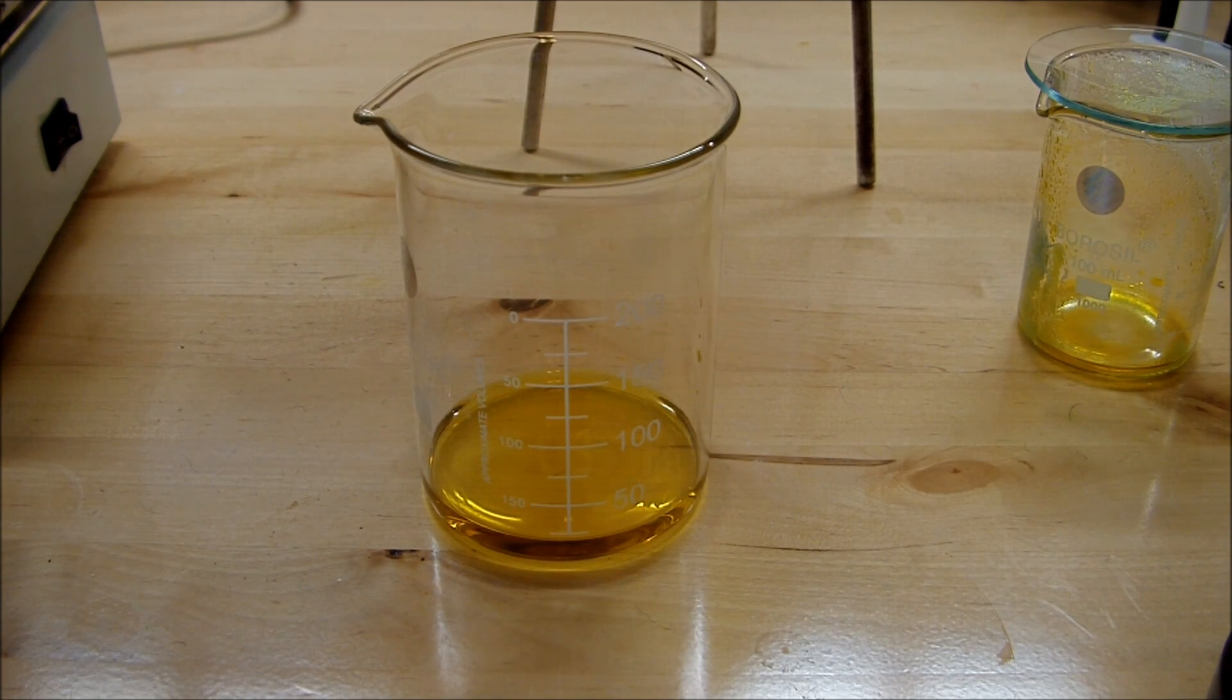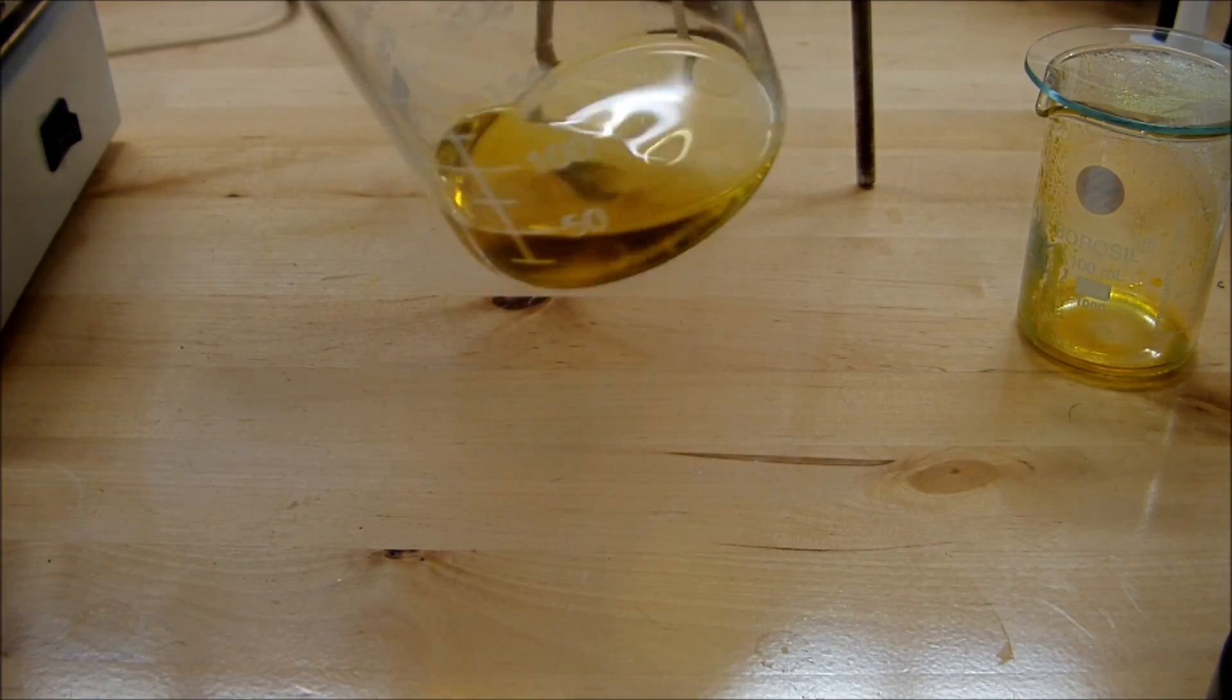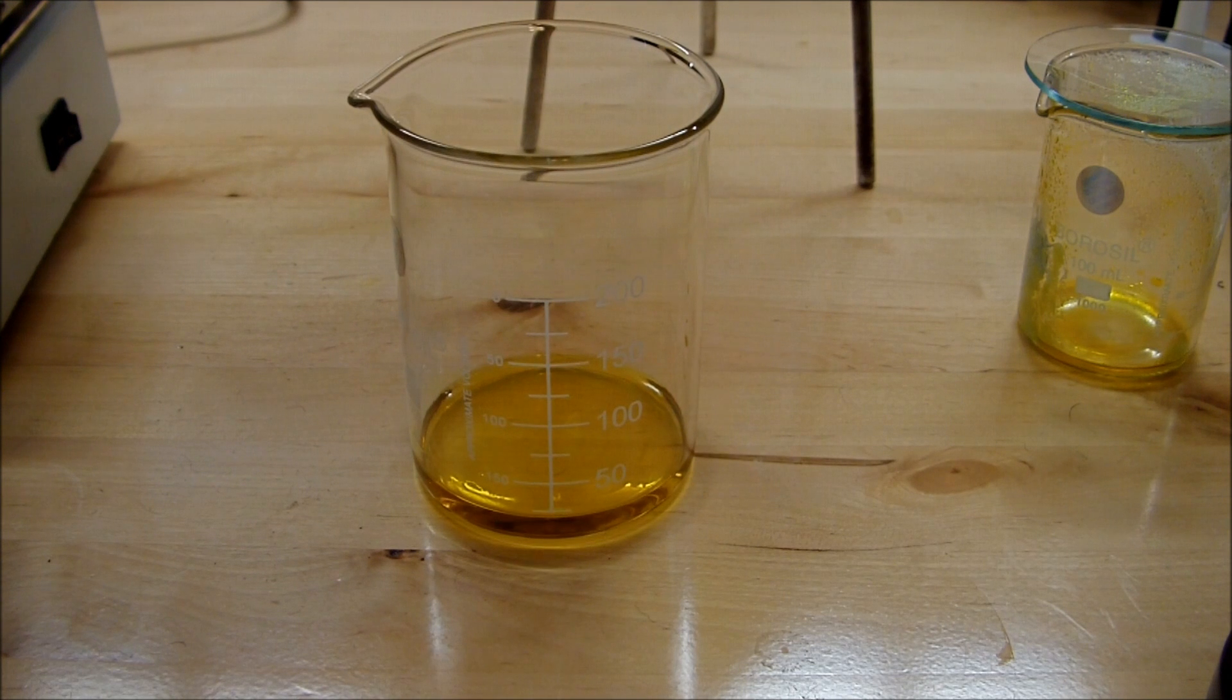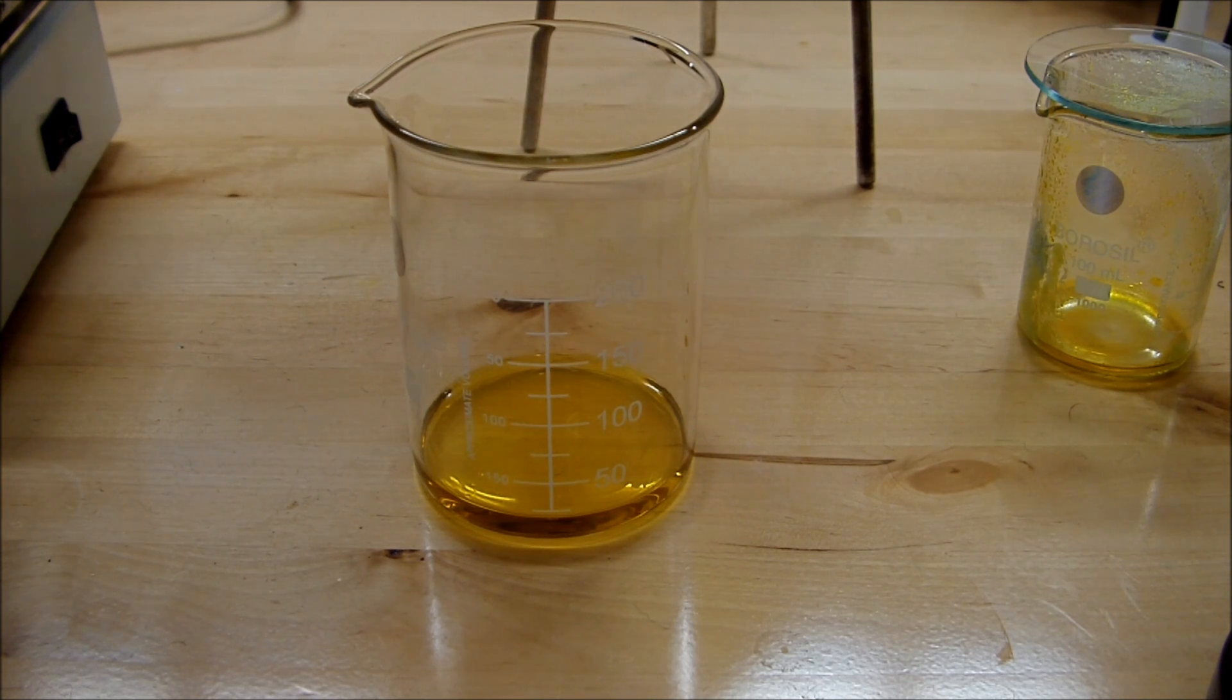I've let my iron 2 chloride solution sit out for a couple of hours, and you can see that it's darkening significantly. That's because iron 2 chloride is pretty unstable, and it very easily oxidizes to iron 3 chloride when just left out in the open like I did.